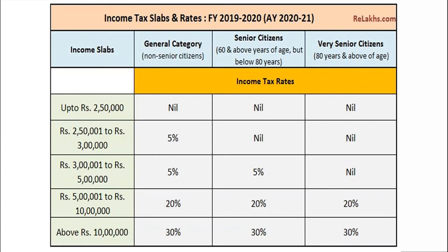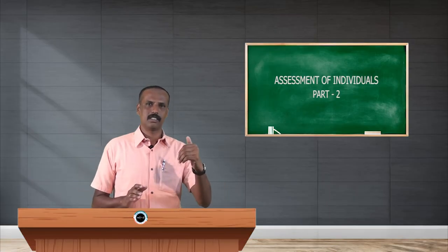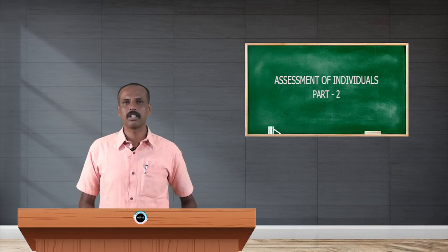For the last category — more than 80 years of age — up to 5 lakh rupees of income is exempted. Then 5 lakh to 10 lakh: 20% directly; they do not have any 5% slab. Above 10 lakh: 30%. So this is the slab for three kinds of categories: less than 60 years, 60 to 80 years, and 80 and above, for individual assessee.